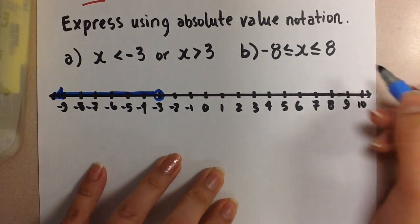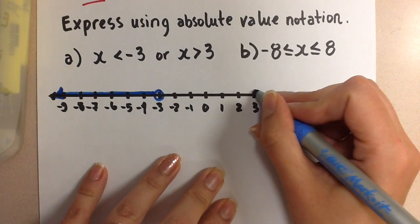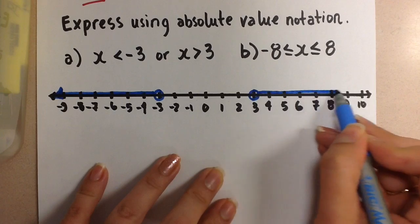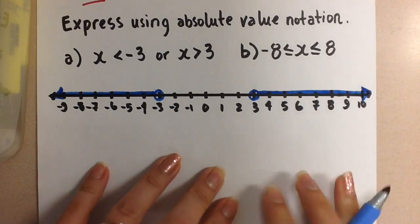And on the other side of the number line, in the positive values, x is greater than 3, so again we put an open circle because it doesn't include 3. And then x can be any value to the right, this way. So this is what that looks like.